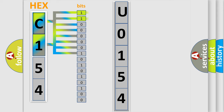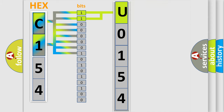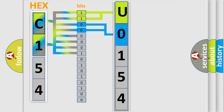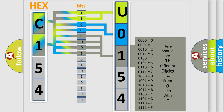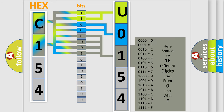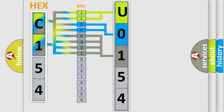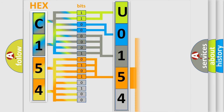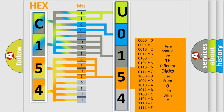By combining the first two bits, the basic character of the error code is expressed. The next two bits determine the second character. The last bits of the first byte define the third character of the code. The second byte is composed of a combination of eight bits — the first four bits determine the fourth character, and the last four bits define the fifth character.